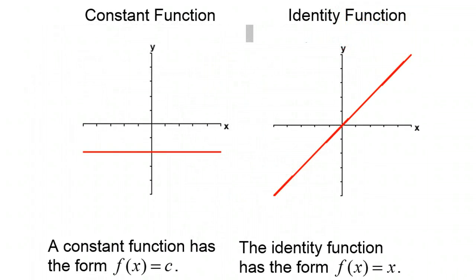There are two special kinds of linear functions. The first is called the constant function, and that's going to be of the form y equals a number. In this case, since it goes through the y-axis at -2, this equation is y equals -2. And remember that the line goes on forever in both directions.